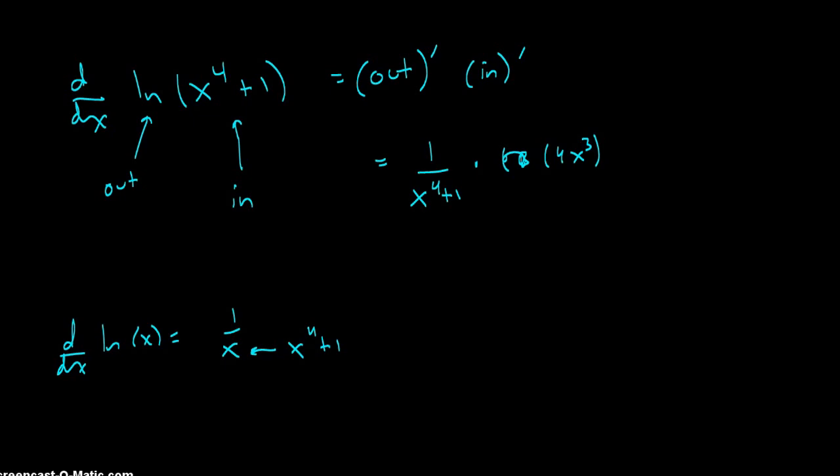And so this could be written as a fraction, a single fraction, four x cubed over x to the fourth plus one. So the derivative of the natural log of x to the fourth plus one is four x cubed over x to the fourth plus one.